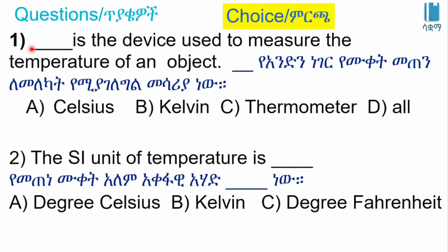The device used to measure the temperature of an object — what is it? The options are: A) Celsius, B) Kelvin, C) Thermometer, D) O.